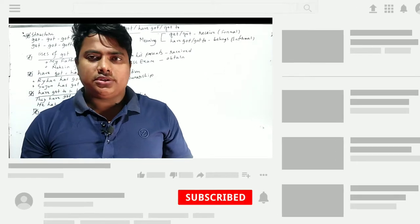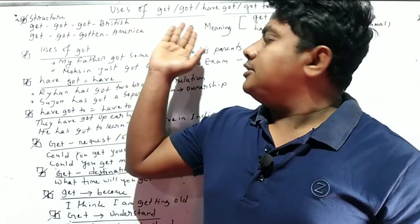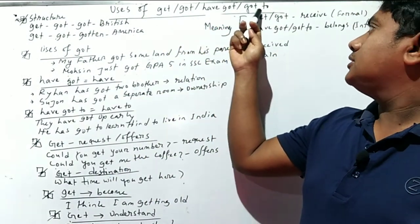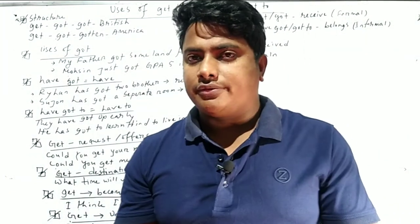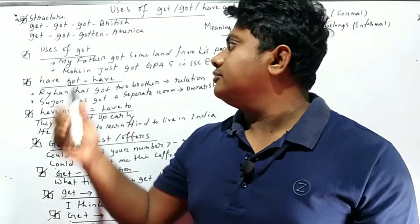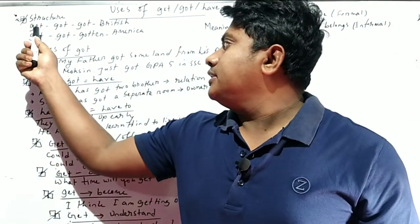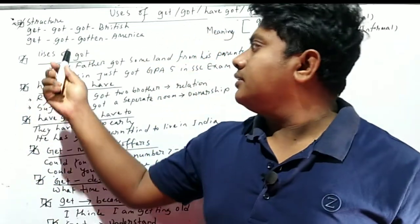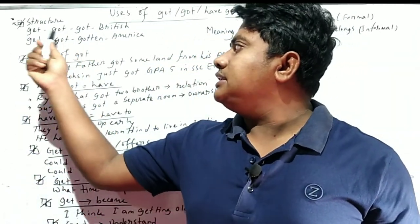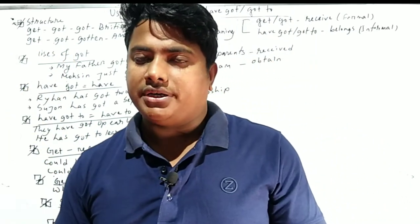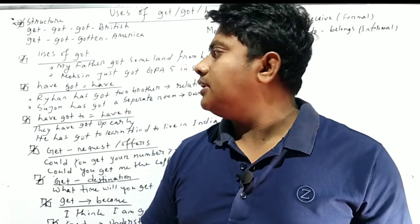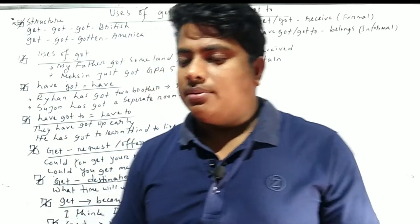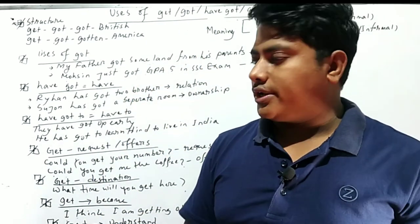So let's get started. There are different uses of get, got, have gotten, and got to in English grammar. A lot of practical exercises are available. Get-got-got is used in British style, while get-got-gotten is used in American style. Both styles are correct, but we use get-got-got as the first form.